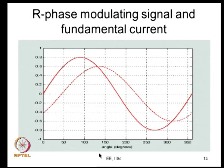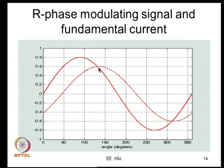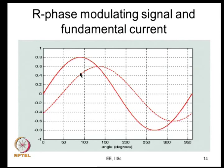Depending on the direction of current, either the top diode or the bottom diode will conduct during the dead time intervals. This dependence on current direction is important. Near zero crossings of the current, there is an inherent assumption: we assume the current direction is always positive or always negative within a sub-cycle, never going through zero.